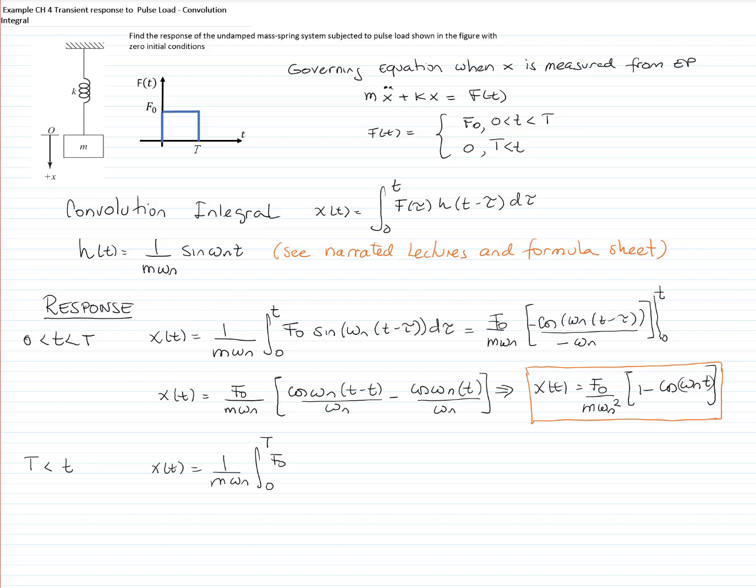Right now, we have that from 0 to capital T, we have the function F sub 0. So we have the same integrals as before with different limits of integration. Now we have that the function between capital T and any other time beyond capital T, the function is equal to 0. So that integral will be equals to 0.